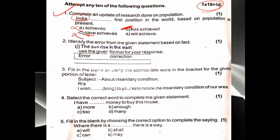Next question: 'The sun rise in the east.' Whenever you are given a sentence where there is a universal truth, or an action happening right now, or a habitual action, we always keep the sentence in simple present tense. 'The sun' is a singular subject, and with a singular subject the verb gets 's' or 'es' added — so 'rise' becomes 'rises'. 'The sun rises in the east.' In the error part write 'rise', and in the correction write 'rises'.